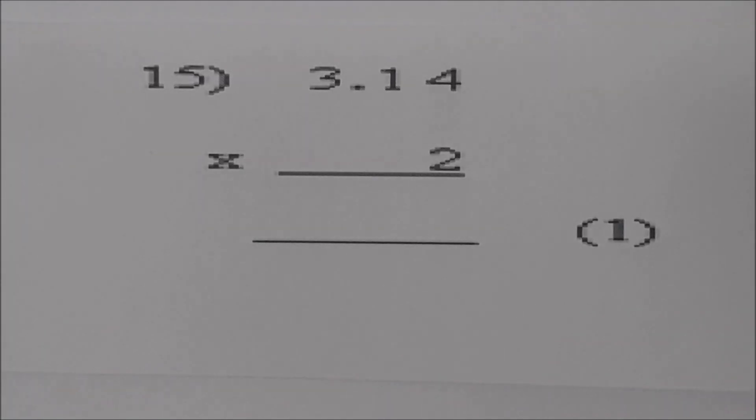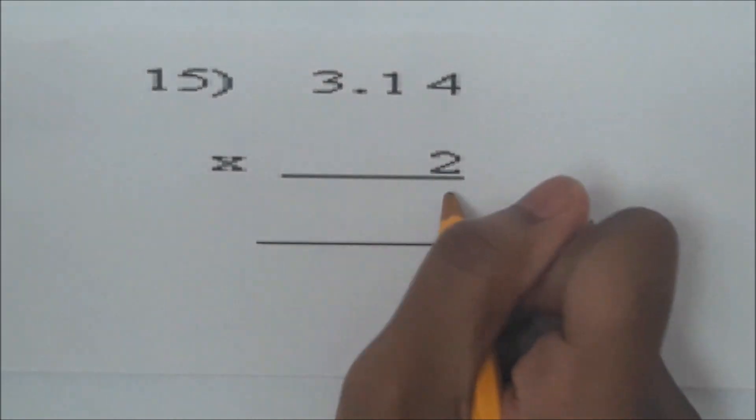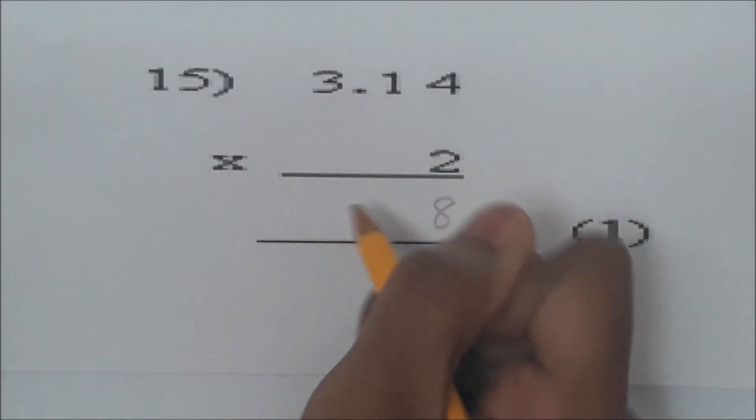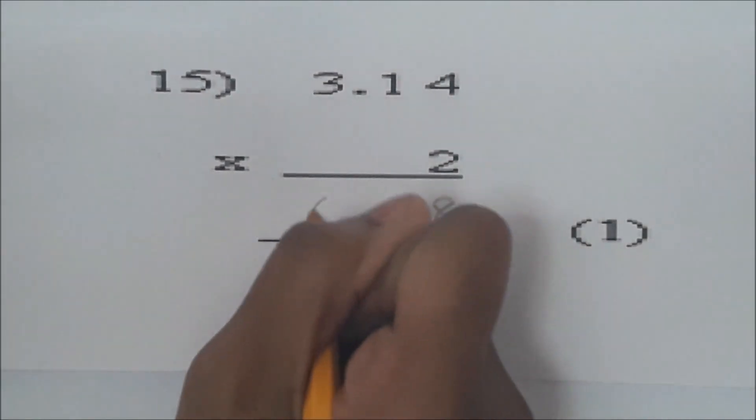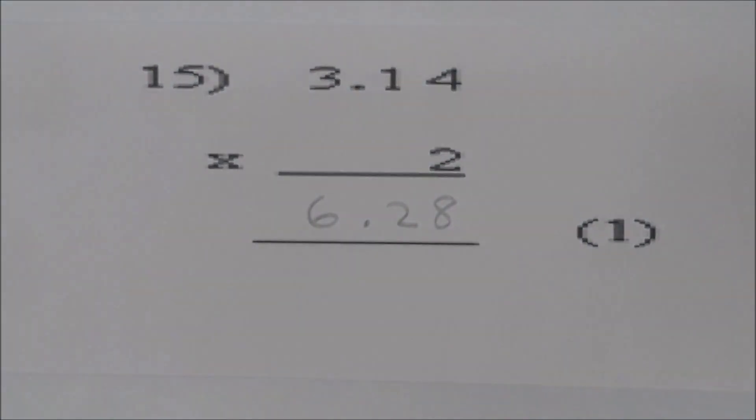Number 15. We're going to multiply 3.14 times 2. 2 times 4 is 8. 2 times 1 is 2. 2 times 3 is 6. The answer is 6.28. Notice we're not doing anything complicated, so if your child cannot do these, practice them again and again before moving on to the harder ones.